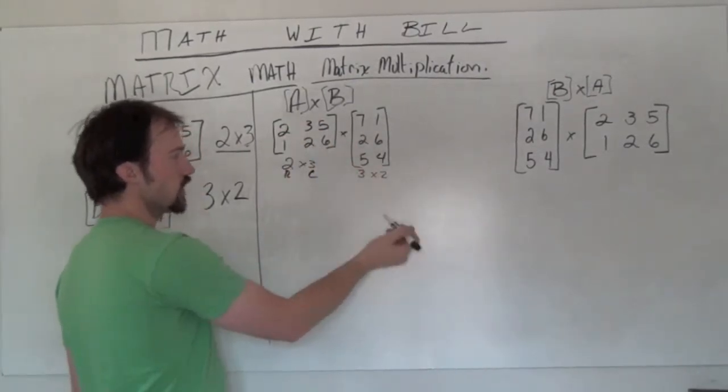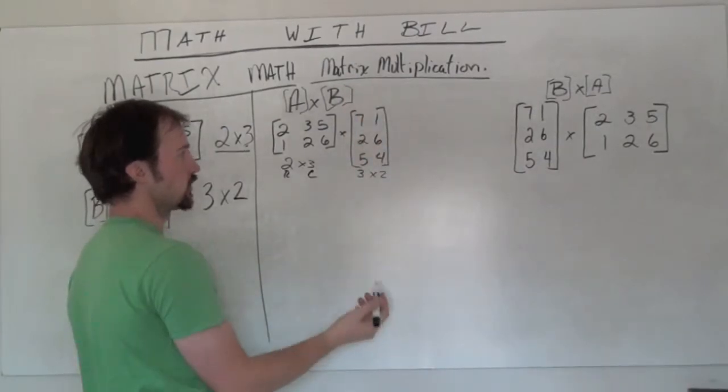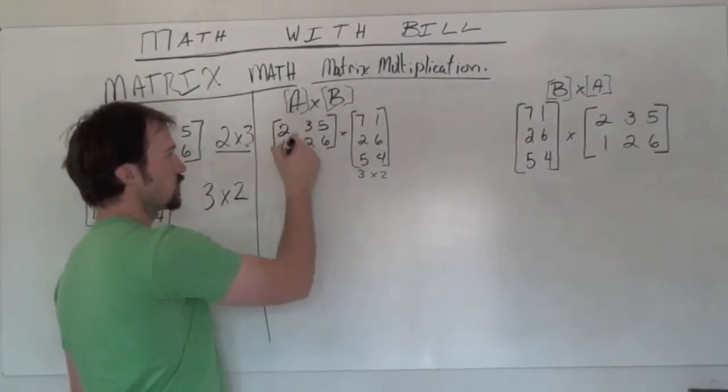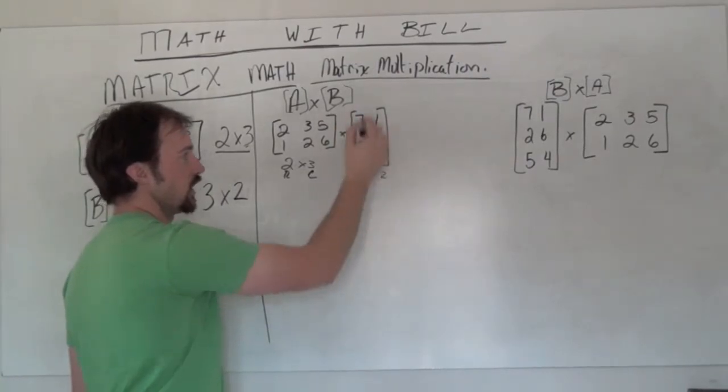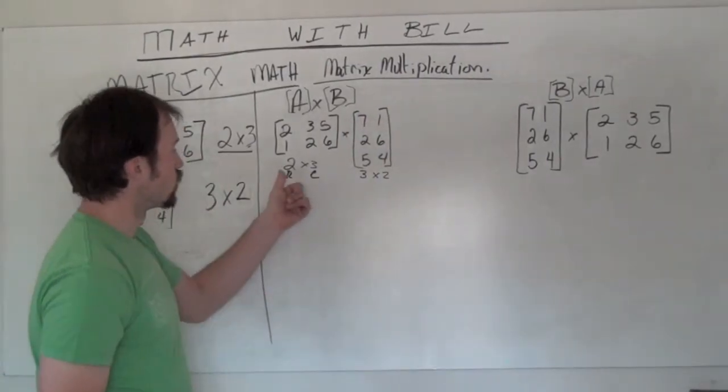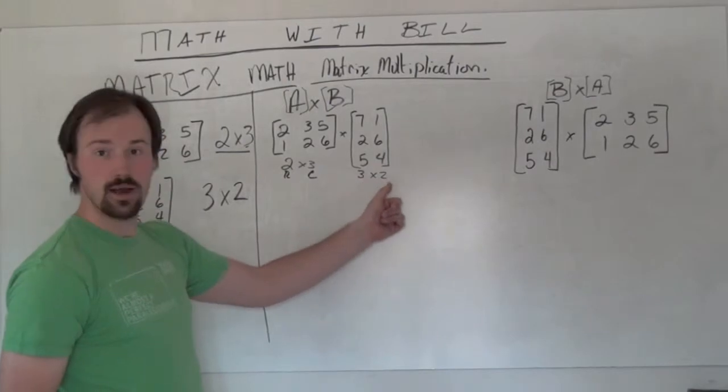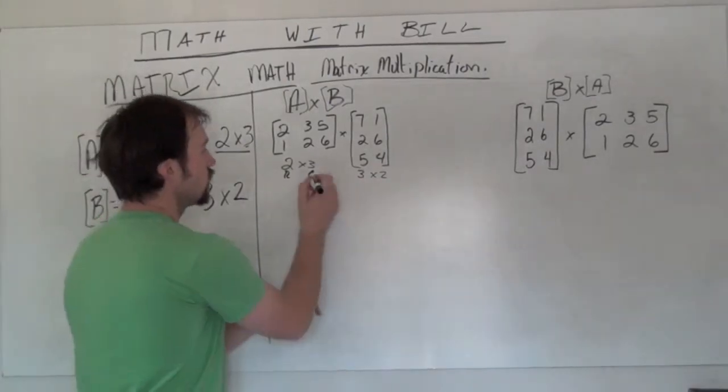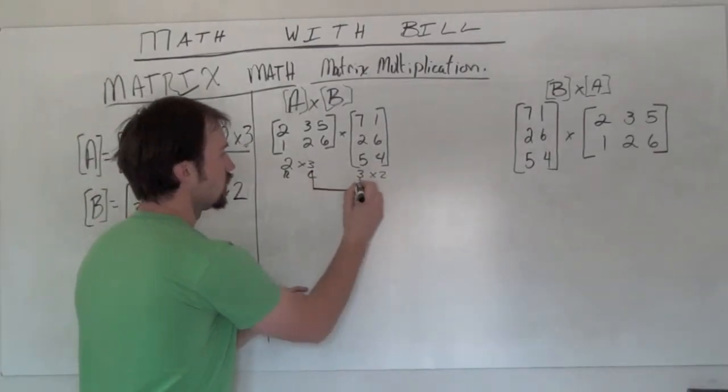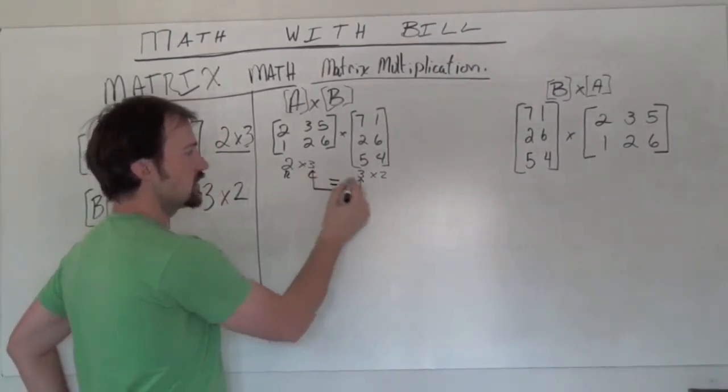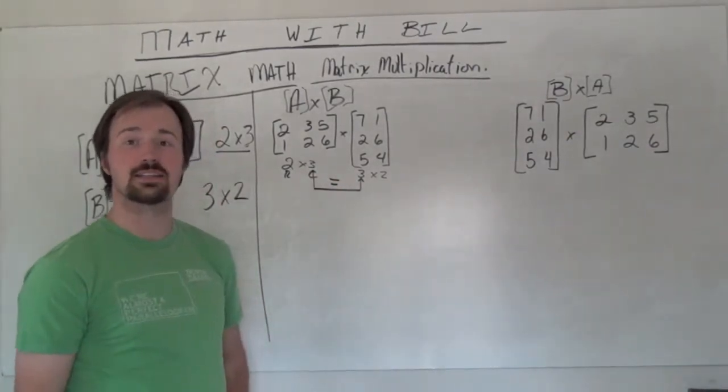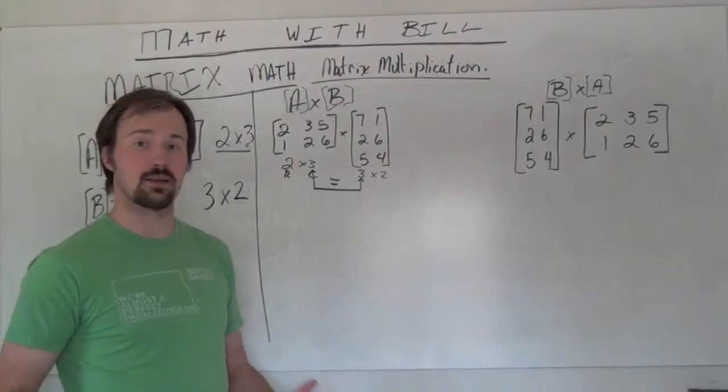Rows are those horizontal lines. Columns are the vertical lines. So we have 2 horizontal and 3 going vertical, whereas we have 3 going horizontal and then 2 vertical. So a 2 by 3 times a 3 by 2 means we can multiply these two together because our inside dimensions are the exact same. If they're not the exact same, we'll have a problem.